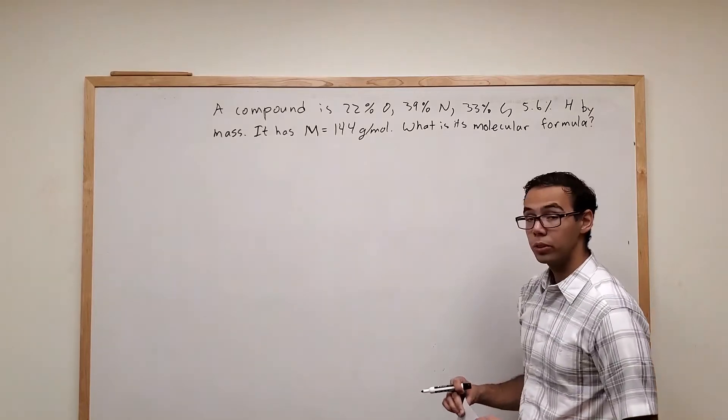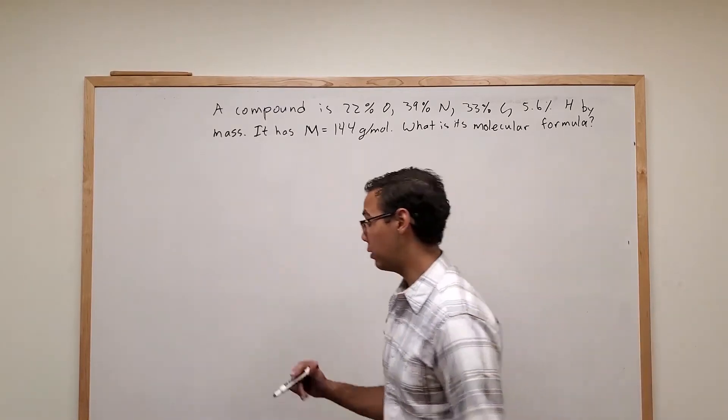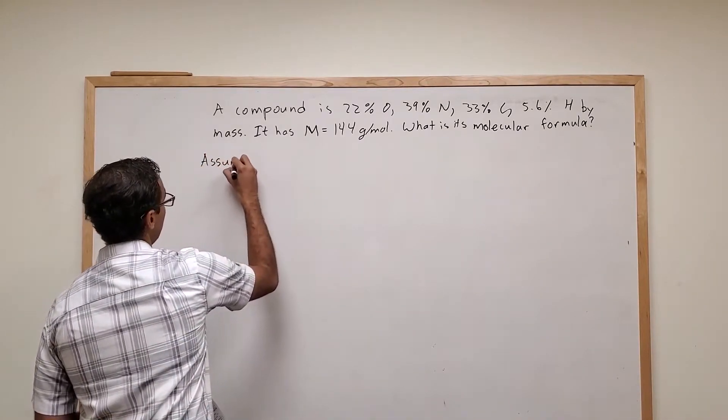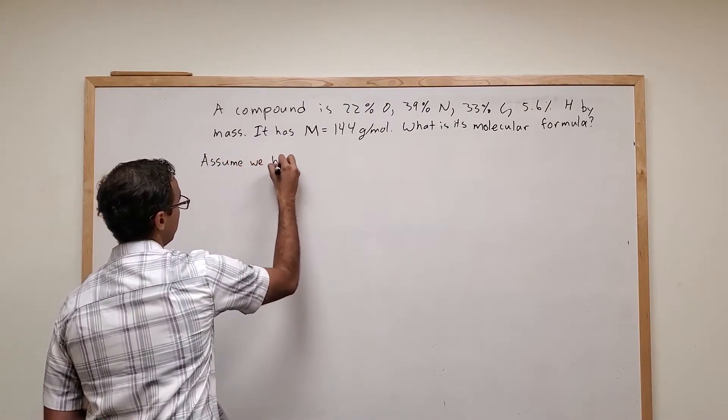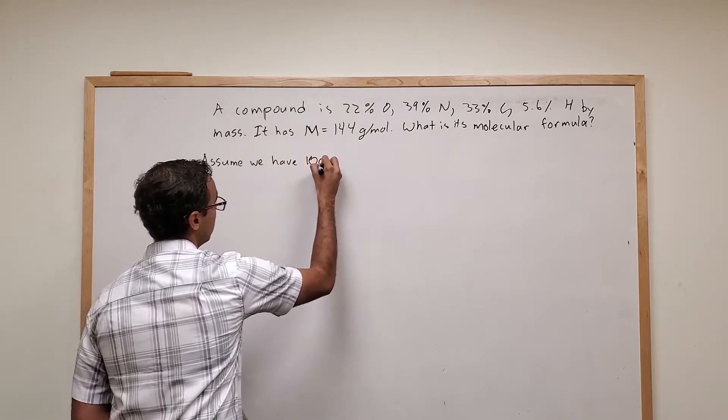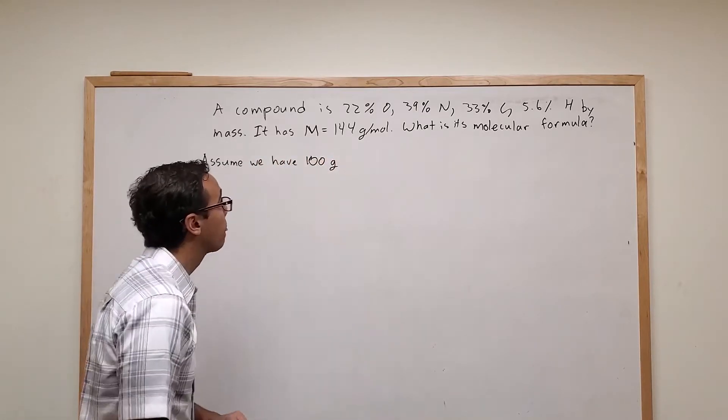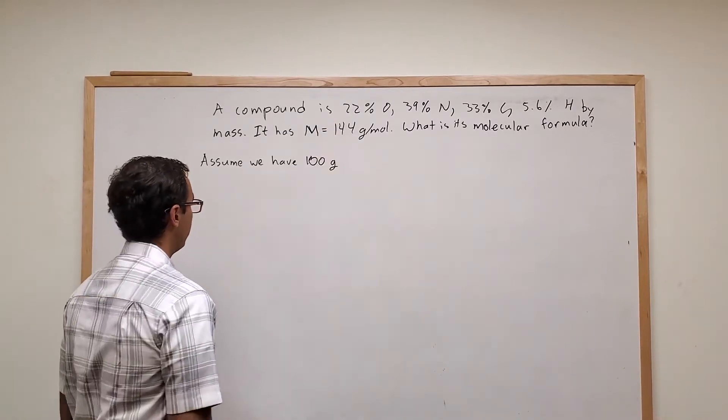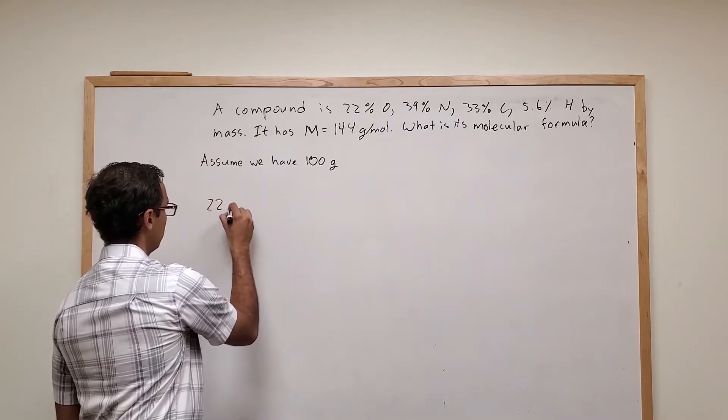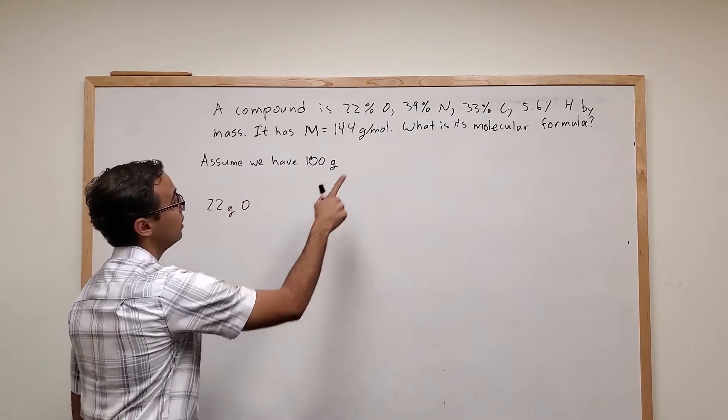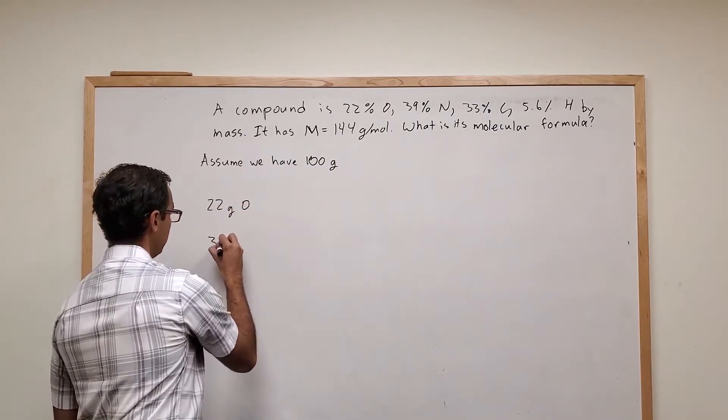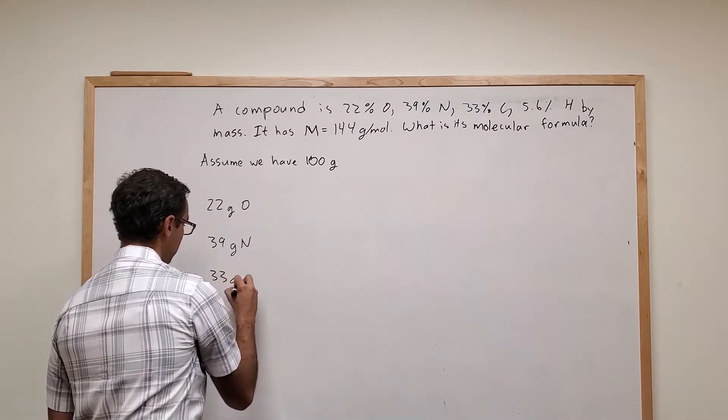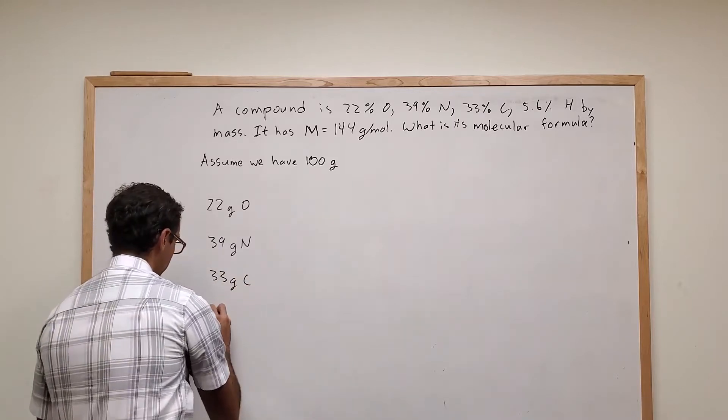So the first step, we're going to assume we have 100 grams of compound X. Okay, well if we have 100 grams and we know that we have 22 grams of oxygen, 39 grams of nitrogen, 33 grams of carbon, and 5.6 grams of hydrogen.